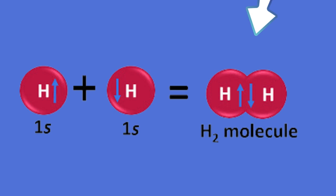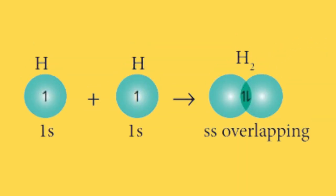For instance, in a hydrogen molecule H2, the 1s orbitals of each hydrogen atom overlap, creating a bond through shared electrons.